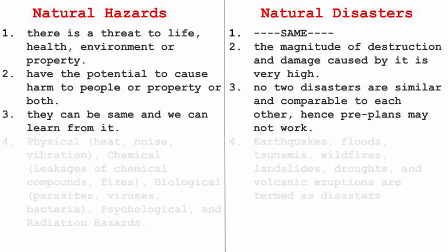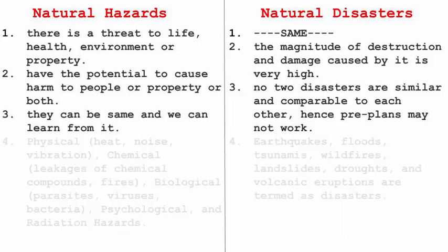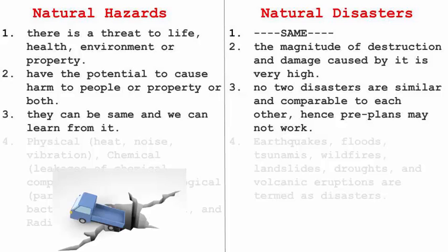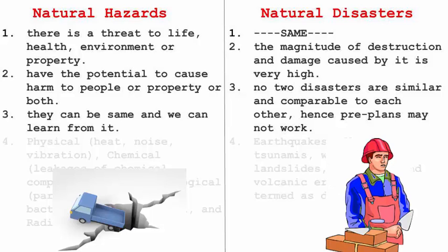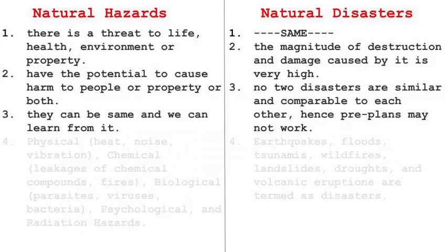Natural hazards can recur and we can learn from them. Take the example of a gas leak: if there was a gas leak last year, we can control it by implementing a particular system or procedure to stop it from occurring next time. On the other hand, no two disasters are similar and comparable to each other, so pre-planning may not work. For example, in the case of an earthquake, we can make houses stronger or move to a place where earthquakes don't happen, but we still cannot guarantee the earthquake won't happen again or measure the destruction it causes. Humans are too small in front of nature in this case.